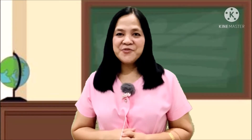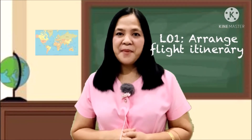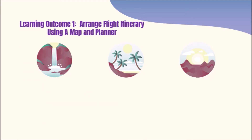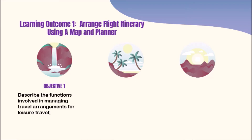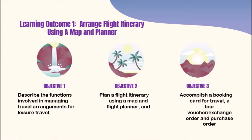So remember our school's motto: Ako ay Disciplinado. This is our first week in the third quarter and our lesson is entitled the Travel Management Cycle. Learning Outcome One: Arrange flight itinerary using a map and a planner. At the end of the lessons, you are expected to achieve the following objectives: Objective One, describe the functions involved in managing travel arrangements for leisure travel; Objective Two, plan a flight itinerary using a map and flight planner; and Objective Three, accomplish a booking card for travel, a tour voucher, exchange order, and purchase order.